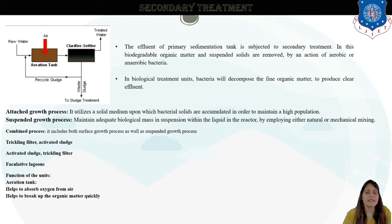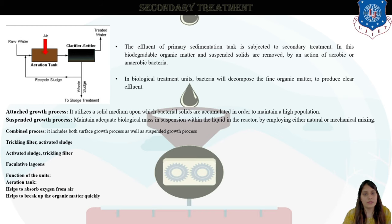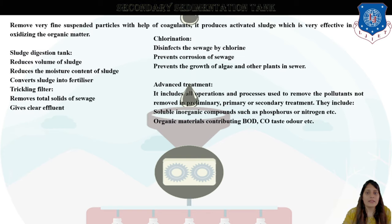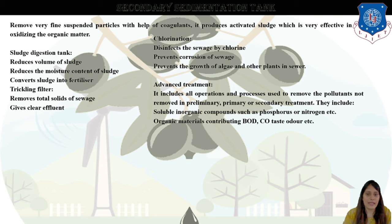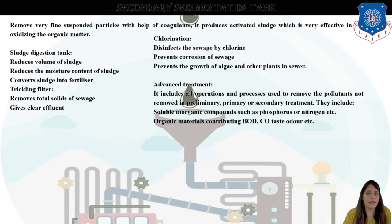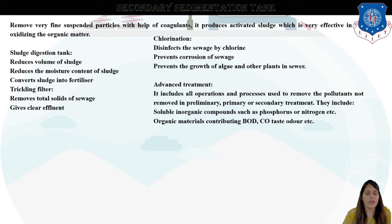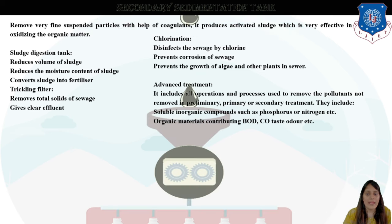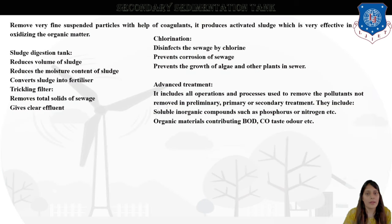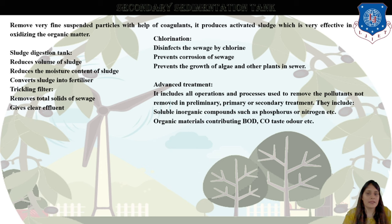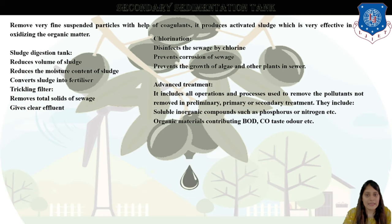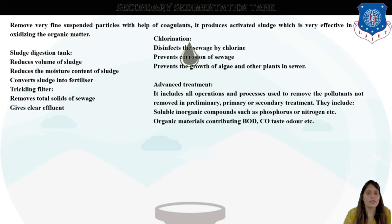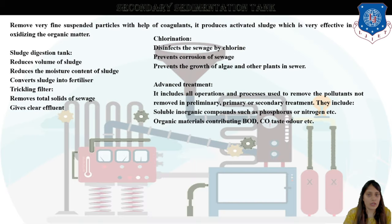This is how secondary treatment is provided in the wastewater treatment plant. In the secondary sedimentation tank, very fine suspended particles are removed with the help of coagulants — the chemicals provided into the water — and it produces activated sludge which is very effective in oxidizing organic matter. The sludge dilution tank reduces the volume and moisture content of sludge.